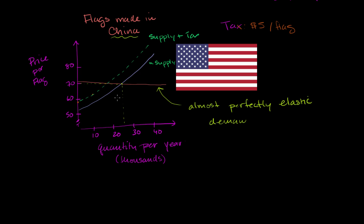So let's think about what happens here. Your equilibrium price was at 70 before, now our equilibrium price is still pretty much at 70, but our equilibrium quantity has gone down dramatically. Our equilibrium quantity has gone down to, I don't know, it looks like about 18,000 flags per year.